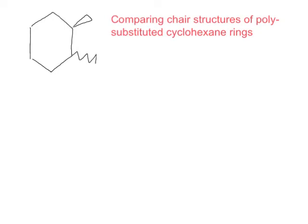Hi everyone, Dr. B here. In this video, what I'd like to do is show you how to compare chair structures of polysubstituted cyclohexane rings. By polysubstituted, what I mean is cyclohexane rings with more than one substituent. To show you how to do this, I'll show you a first example with trans-1,2-dimethylcyclohexane, which is the compound shown here.